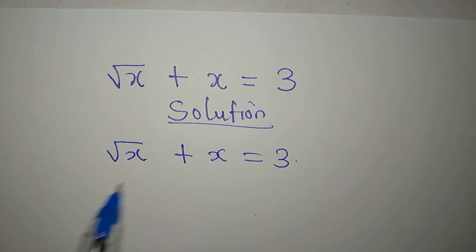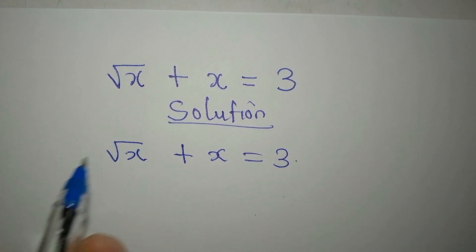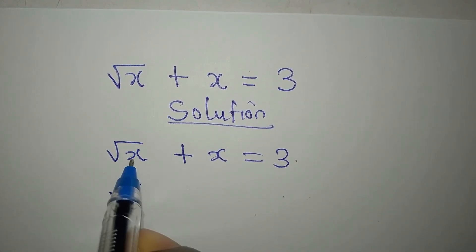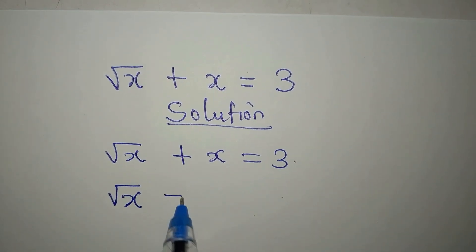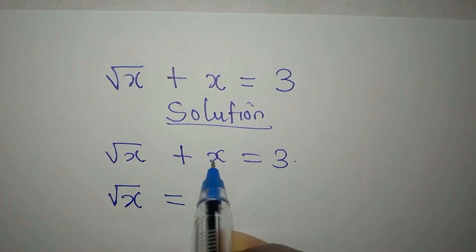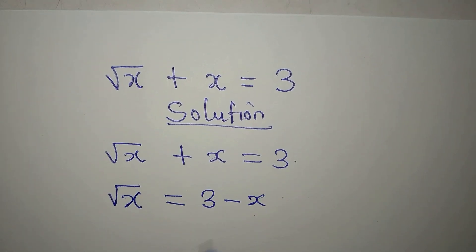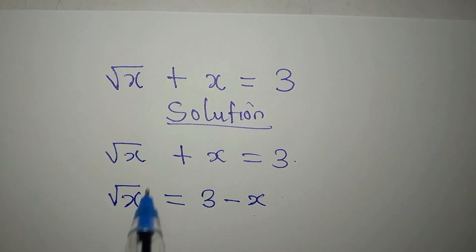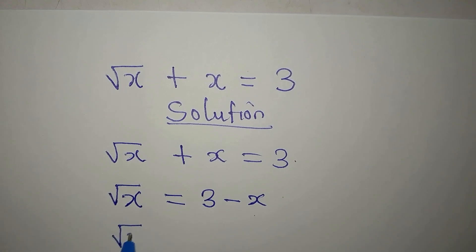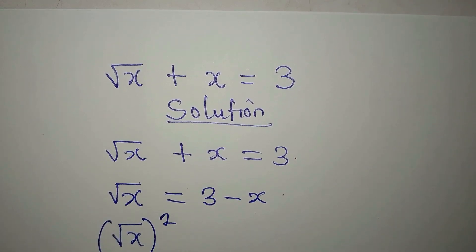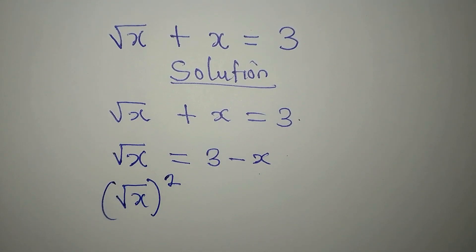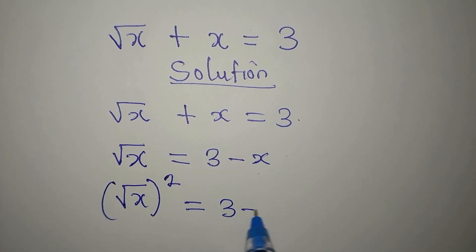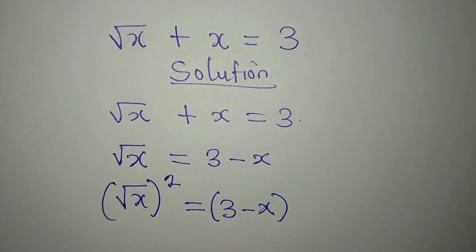My first target is to remove this square root. I'll make the square root of x the subject, so the equation becomes: square root of x equals 3 minus x. To remove the square root, we square both sides, because square root and squaring are opposites.